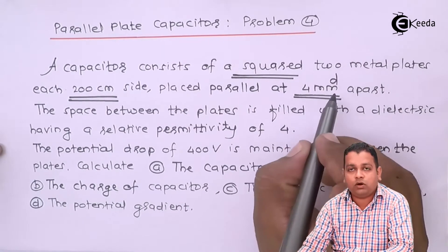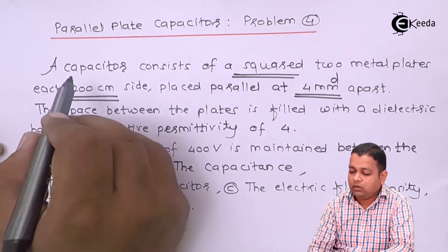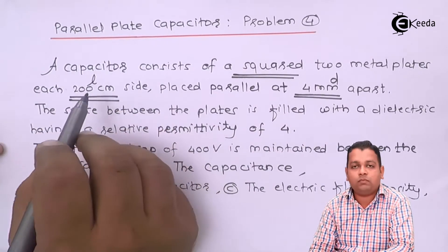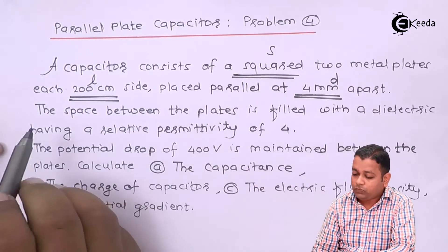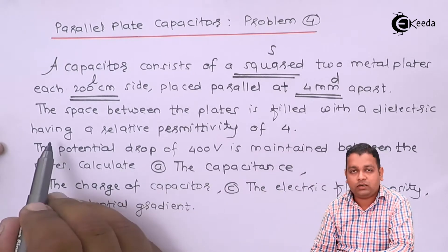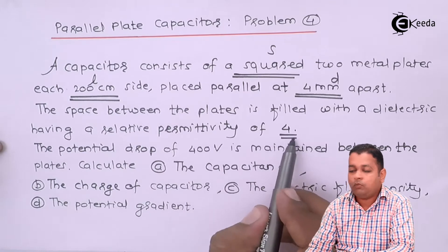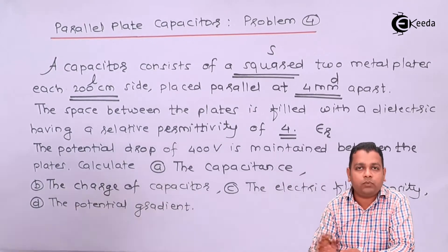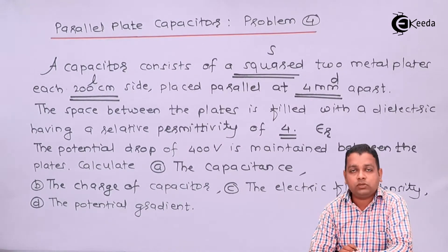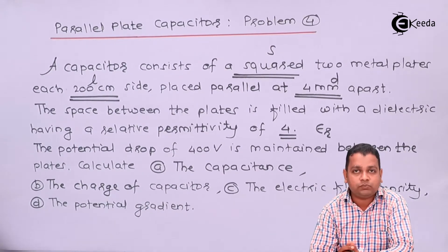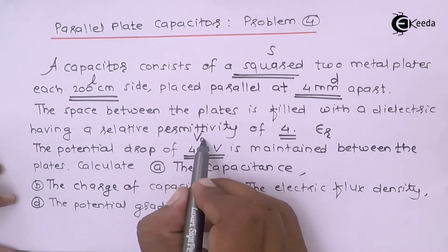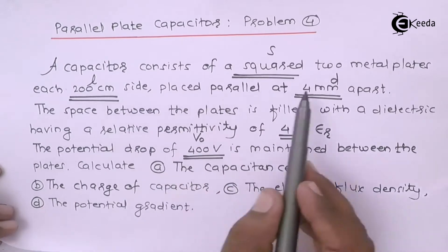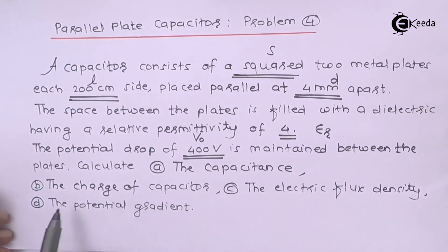The separation distance we denote by small d, so d = 4 mm. The side of the square-shaped metal plate we denote by L, so we can use L squared to get the area of the metal plate. Area is generally denoted by capital S or capital A. The space between the plates is filled with a dielectric with relative permittivity ε_R = 4. The total permittivity is ε = ε₀ × ε_R, where ε₀ = 8.854 × 10⁻¹² farads per meter. The potential difference is V₀. So the given details are L, d, ε_R, and V₀, and we are asked to calculate four parameters.